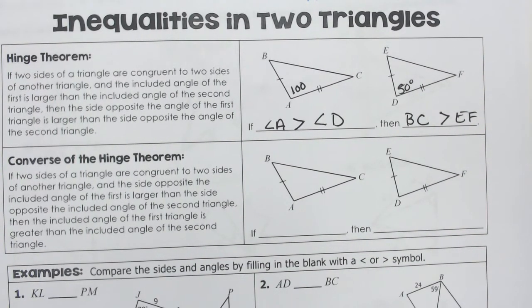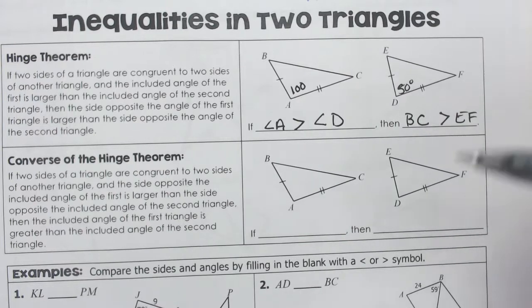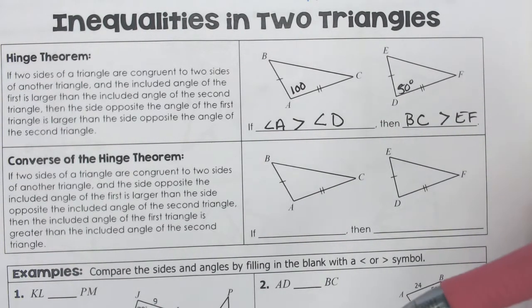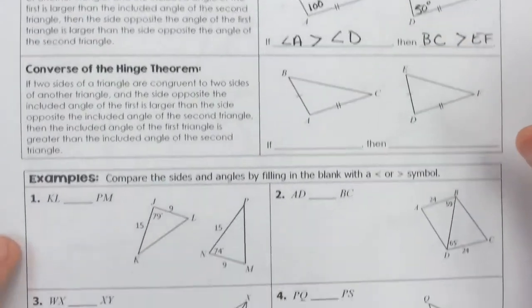All right, so that is all that the hinge theorem means. Don't overthink it. That is all it would mean. The converse means it's just backwards. So if you were told that the angles were greater, then the sides are greater, or if you're told the sides are greater, then the angles would be greater, but it is the same exact process. We're going to do a few quick examples of this.